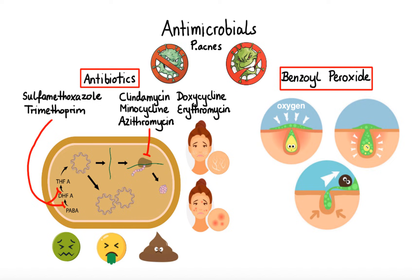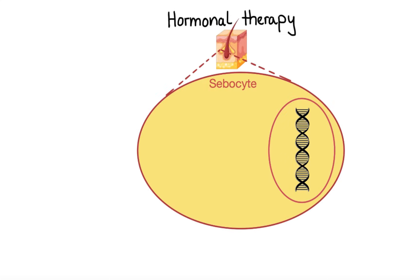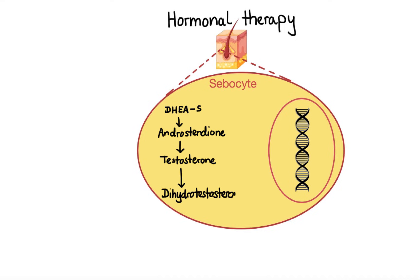Now let's move on to our last group of drugs used in treatment of acne, that is hormonal therapy. As we have learned, sebaceous glands and sebum production play a central role in acne formation, and they are regulated by androgen hormones. Majority of the circulating androgens are produced by the gonads and the adrenal gland, but they are also produced locally by sebocytes, which are the major cell type in sebaceous glands that secrete sebum. Sebum production is mainly regulated by dehydroepiandrosterone sulfate, abbreviated DHEAS. Although DHEAS is considered a weak androgen, sebocytes have the required enzymes to convert it into stronger androgens — starting with androstenedione, then testosterone, and finally the strongest one, dihydrotestosterone. Despite their formation within the sebocytes, these androgens can also be absorbed from the outside.